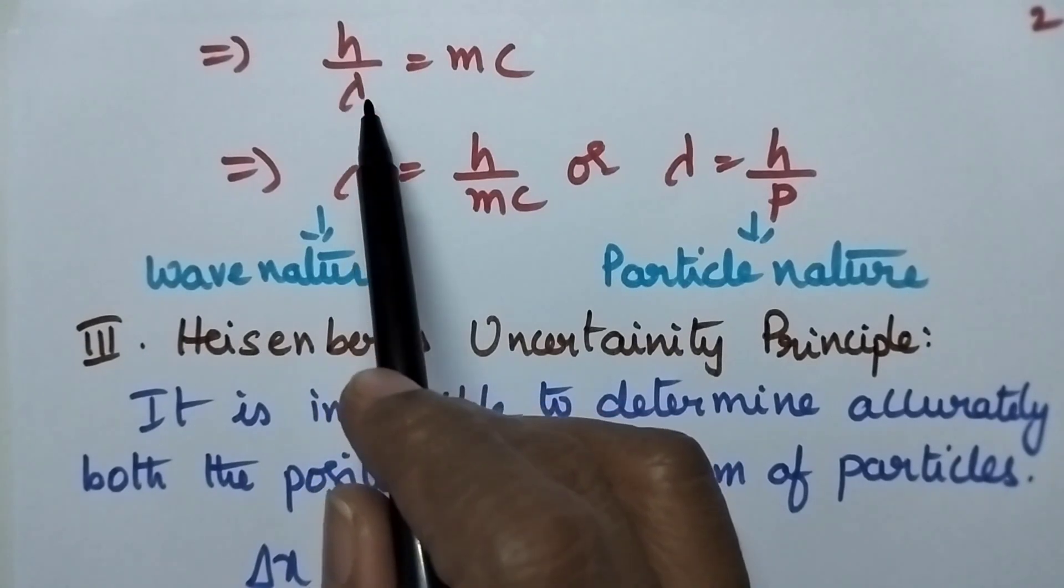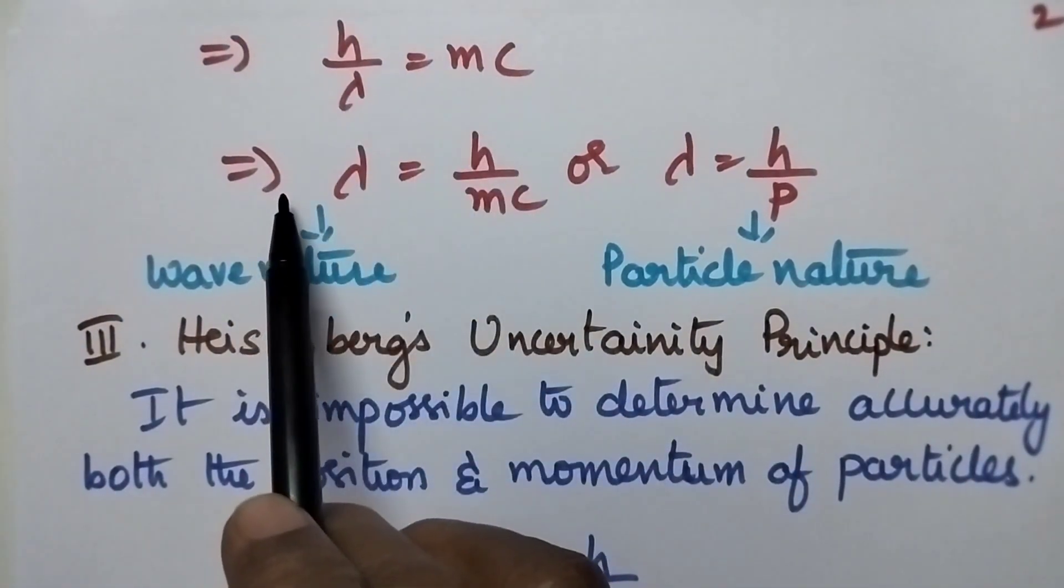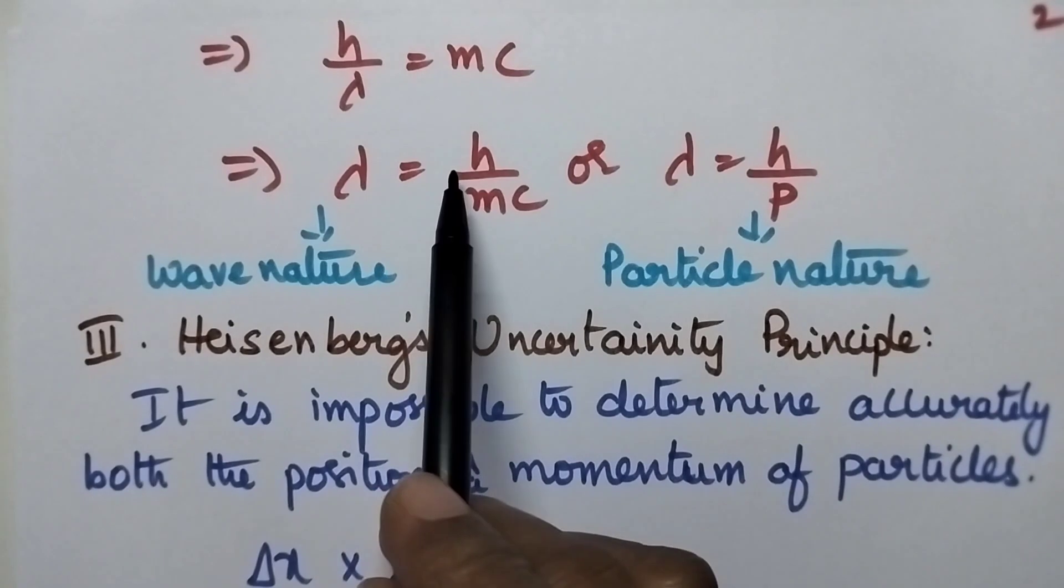That implies h by lambda equals mc, and it can be written as lambda equals h by mc.